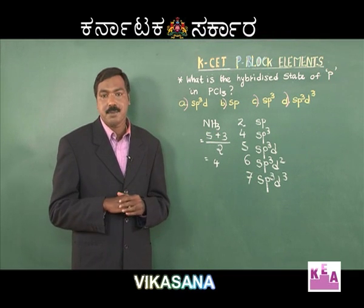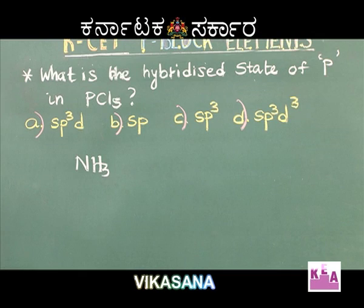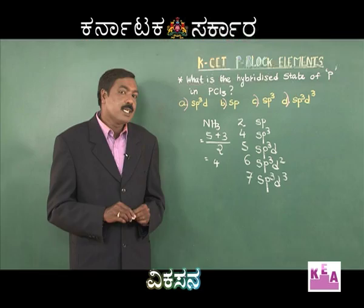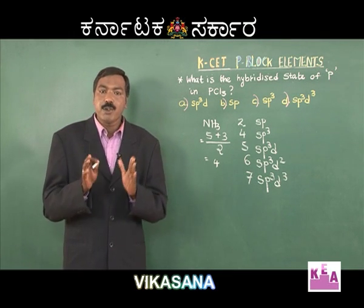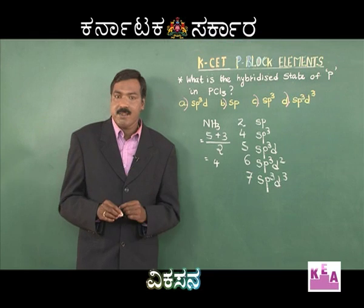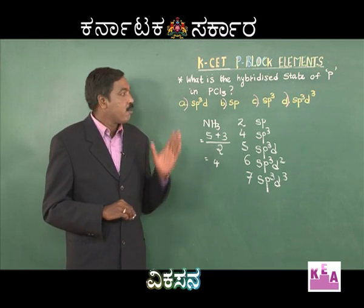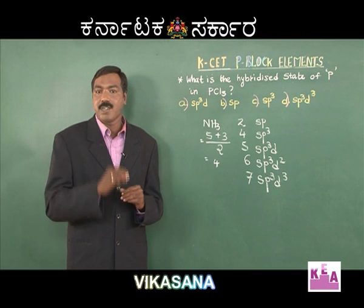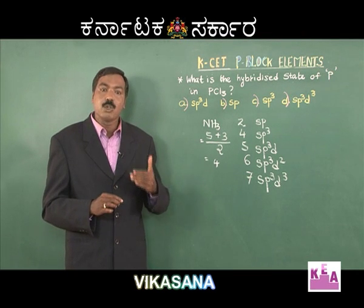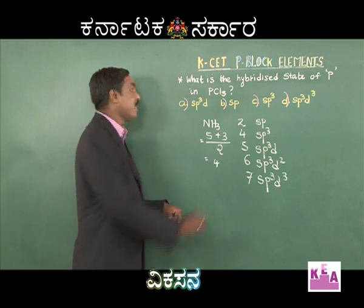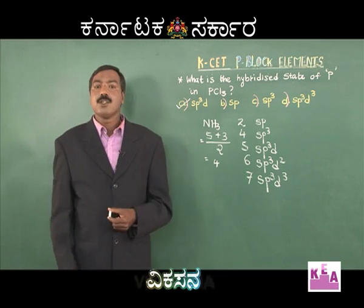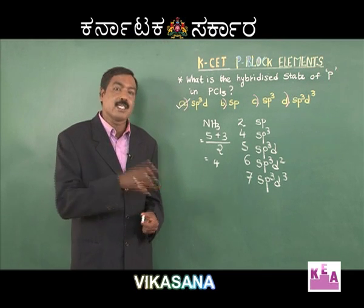Coming back — what is the hybridized state of phosphorus in PCl₅? The central atom is phosphorus, which belongs to group 15, so valence electrons are five. Chlorine is a monovalent atom and there are five chlorine atoms. Five plus five equals ten; ten divided by two is five. Therefore the hybridization is sp3d, and the correct option is option A.